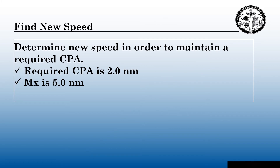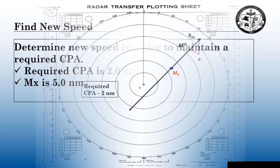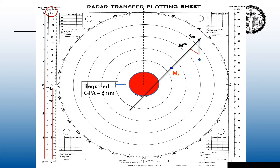Sometimes we cannot change course. Maybe we have traffic off our starboard side, maybe we have shoal water off our starboard side, so we cannot change course to starboard — we're going to have to change speed. In this section, we're going to find a new speed and determine it in order to maintain a required CPA. Our required CPA is still two nautical miles and the execution point, or MX, is going to be five miles away. Course changes and speed changes are done exactly the same way: if I change course on a relative motion radar I change relative motion; if I change speed on a relative motion radar I also change relative motion. So I still need this new relative motion line from MX to touch the tangent of my required CPA of two miles.